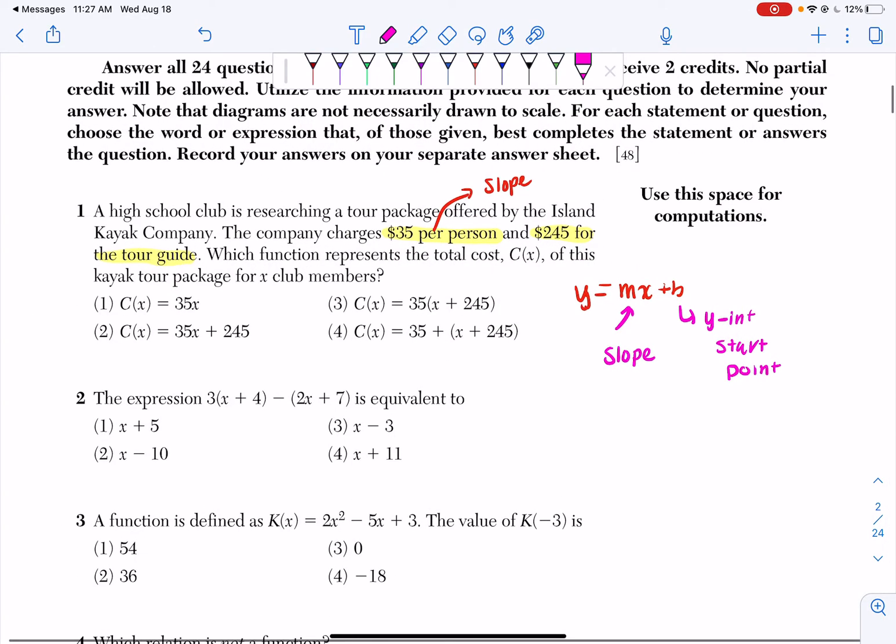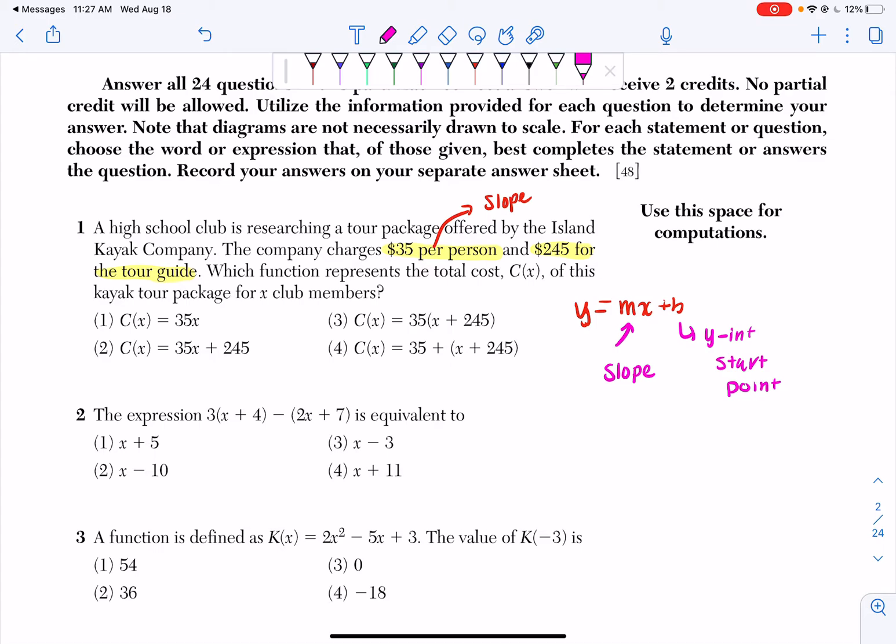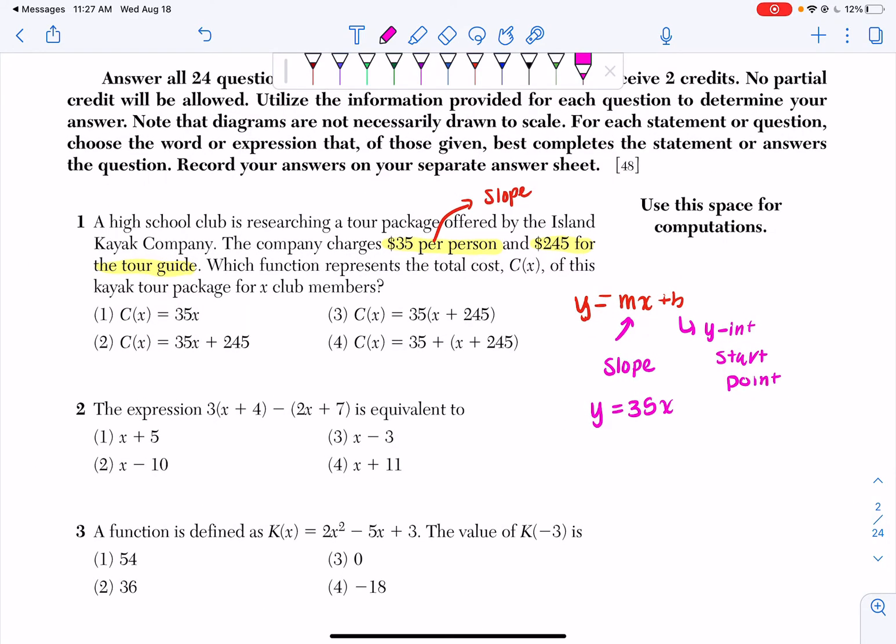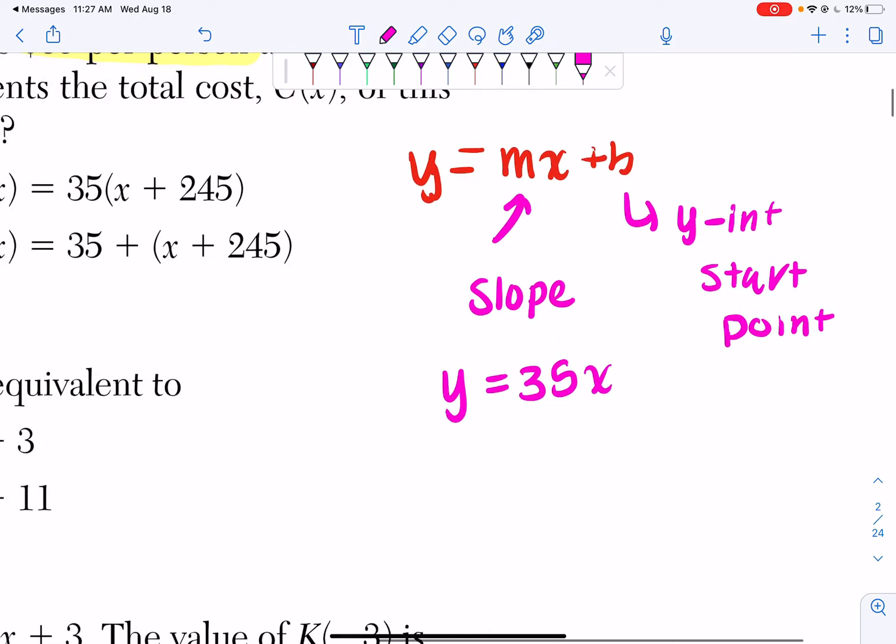If you look, I know that my slope is 35, so my equation is going to look like y equals 35x, and my y-intercept is 245, so I'm going to have plus 245.